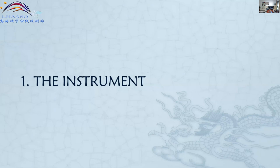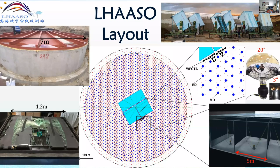Let me introduce the instrument used for this PeVatron search. This is a layout of the detectors. Instead of that aerial picture, now it's a sketch of the detector array. From here to here is 1.3 kilometers. In the central part we have full coverage of all kinds of detectors, totaling one square kilometer, covered by one-square-meter scintillator detectors. With optical fibers, we guide the light from the scintillator to a PMT tube to get information about particle density and arrival time of the particles.